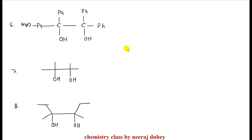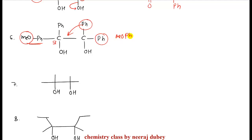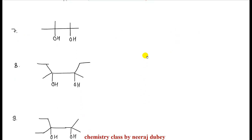In the Ph example, first we decide where the more stable carbocation will form. The carbocation will be more stable on the left side because OMe is an electron-donating group. Now if carbocation forms here, both Ph groups are present — either can migrate — so the product is Ph-C(=O)-C(OMe)(Ph)(Ph).